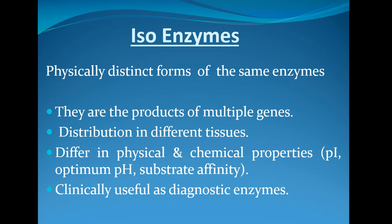Isoenzymes are clinically useful as diagnostic enzymes. To identify certain disorders or tissue damages we can use these isoenzymes. So to summarize: isoenzymes are physically distinct forms of the same enzyme, products of multiple genes, distributed in different tissues, differ in physical and chemical properties, and are clinically useful as diagnostic enzymes.